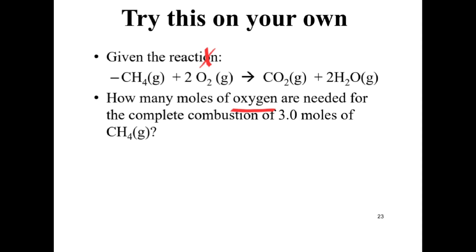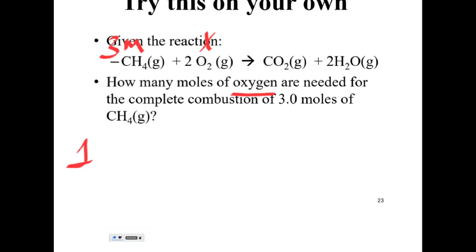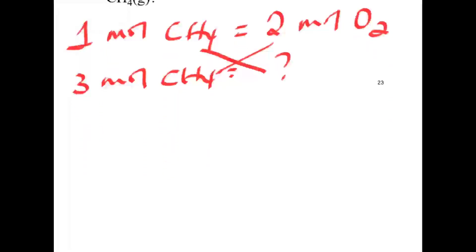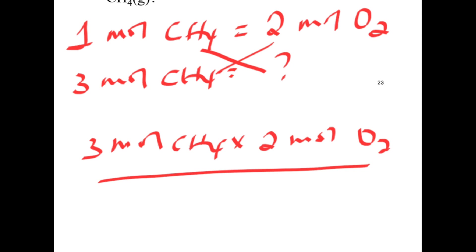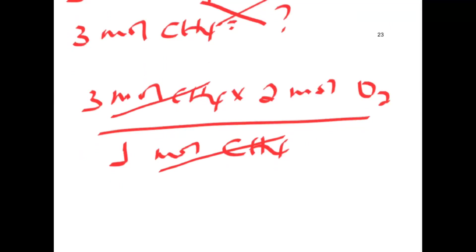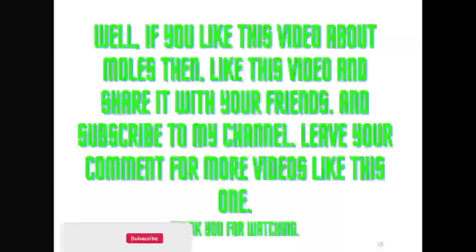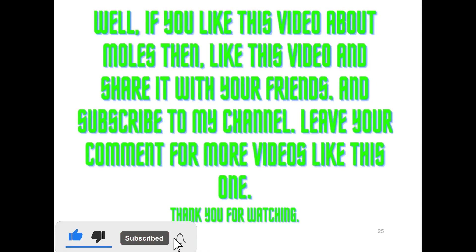We have three moles of methane. From the balanced chemical equation, for one mole of methane, two moles of oxygen are needed. If you have three moles of methane, the calculation is three moles of methane times two moles of oxygen over one mole of methane, giving six moles of oxygen needed. That was all about mole ratios.